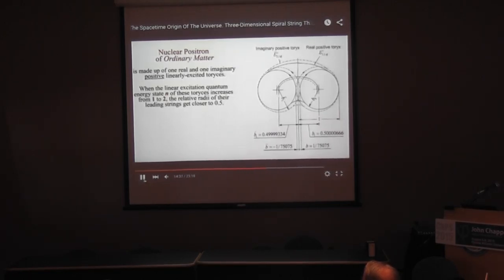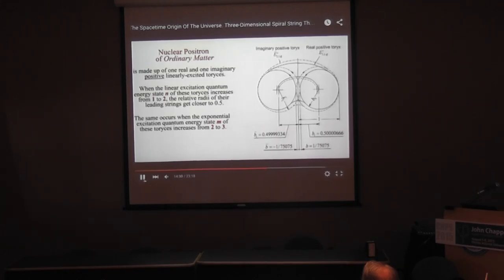The relative radii of the positron leading strings get closer to 0.5 as the linear excitation quantum energy state increases from 1 to 2, and the same occurs when the exponential excitation state increases from 2 to 3. At the same time, the positron mass and charge remain unchanged.